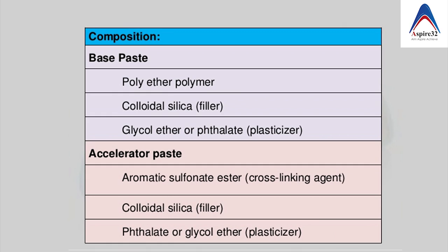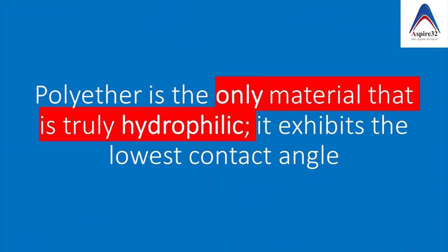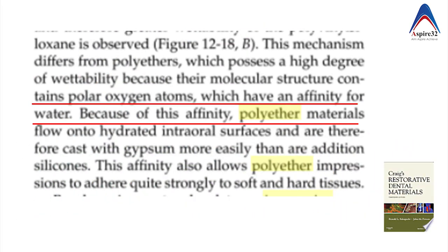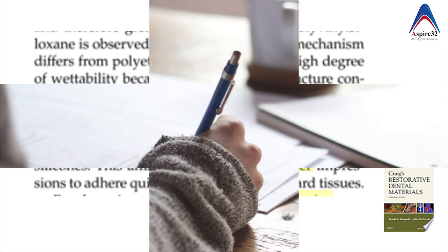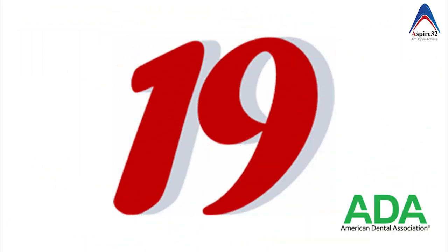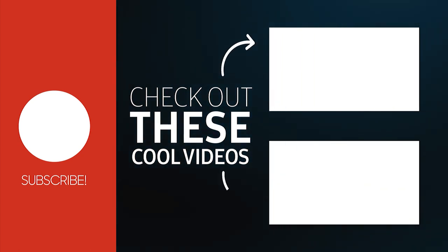Various other components of polyether are also mentioned in the charts. Polyether is the only material that is truly hydrophilic in nature because it exhibits the lowest contact angle — this is because it has polar oxygen atoms which have an affinity for water. This question is very commonly asked in the exam. Although we have learned the various compositions of different elastomeric impression materials, according to ADA specification 19, impressions are classified based on consistency and not based on chemical composition. The properties keeping these important aspects in mind will be covered in the next video.